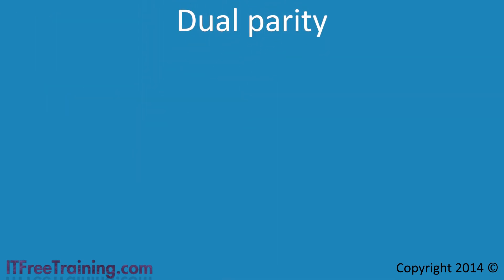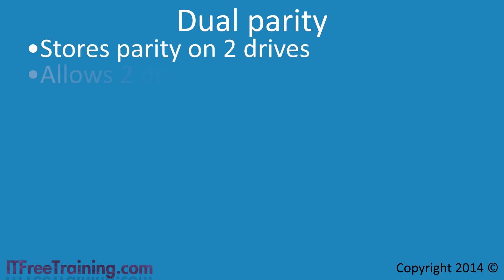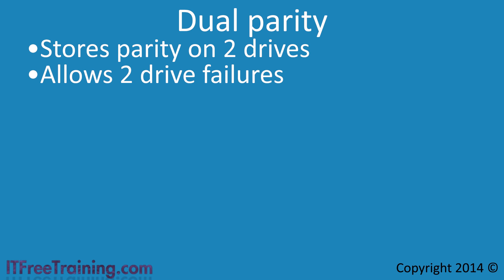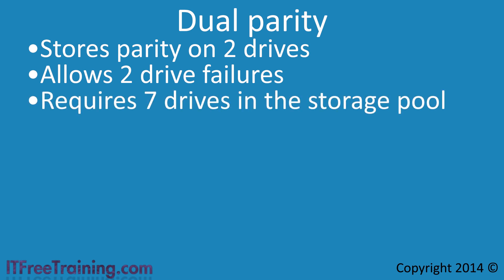The next feature is dual parity. Parity is available in Windows Server 2012, allowing the storage pool to keep operating with the loss of one drive. In Windows Server 2012 R2, support has been added to store parity on two drives, allowing a virtual drive with parity to survive two drive failures. When creating a virtual disk using the parity layout, the administrator has the option to use dual parity. Dual parity requires at least seven drives in the storage pool — if you have fewer than seven drives, only single parity will be available.